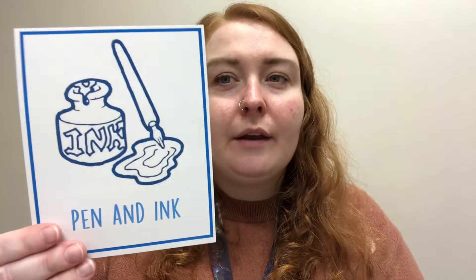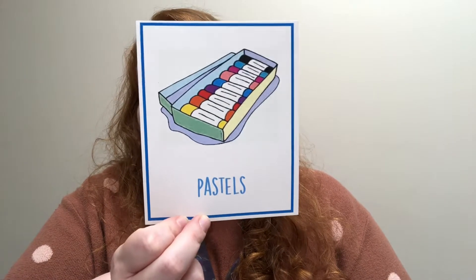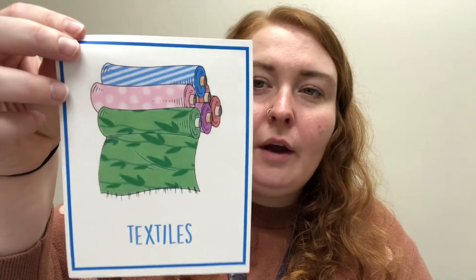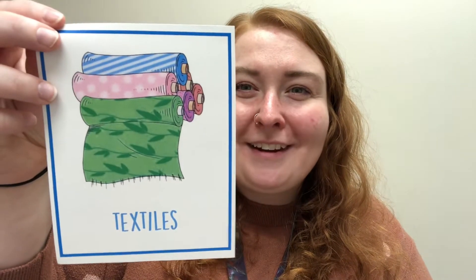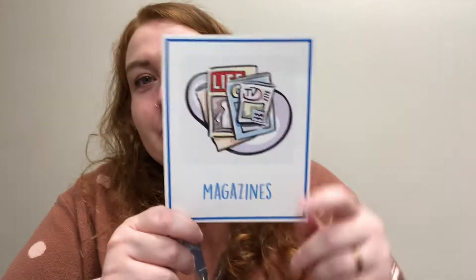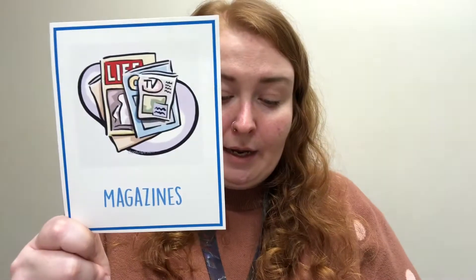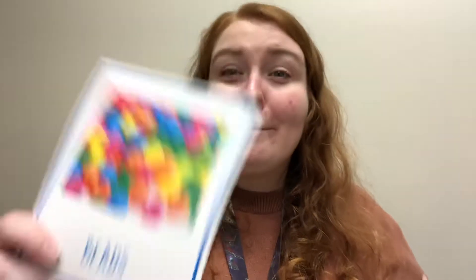This is another tricky one: pen and ink. This one we talked about before — it's kind of like a mix between crayons and chalk together; we call them pastels. And that one — I think I heard someone yell out fabric. It is fabric, but we have a special word for it in art: we call it textile. And we use these — our parents may have these at home — we use these to cut up and use the pictures inside; they're called magazines. And we use these to make jewelry: beads.